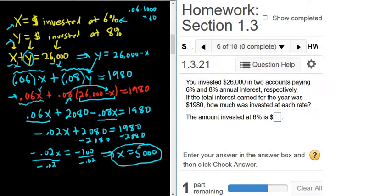So to get the other one, you just do 26,000 minus this. So y is going to be 21,000, right? You just take 26,000. You subtract 5,000. So 26,000 minus 5,000. And so you get $21,000. And that's the money invested at 8%. Kind of a harder problem, so I hope that made sense.